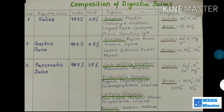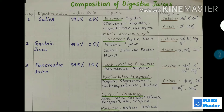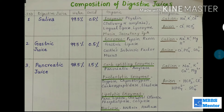Number one is saliva. Saliva is secreted in the mouth. It has 99.5% water and 0.5% solids. Coming to enzymes, it has the ptyalin enzyme, which is also known as salivary alpha-amylase. Salivary alpha-amylase acts on starch.